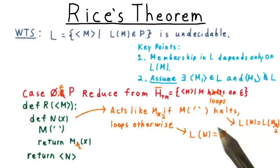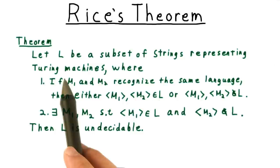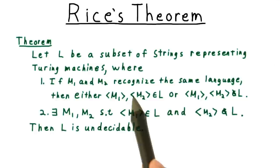All in all then, we have proved the following theorem. We'll let L be a subset of strings representing Turing machines, having two key properties. First, if M1 and M2 recognize the same language, that is, the same set of strings, then their descriptions are both in or out of the language.